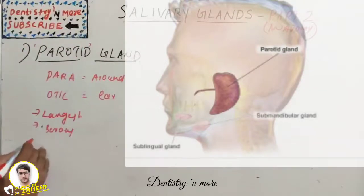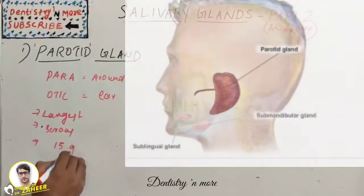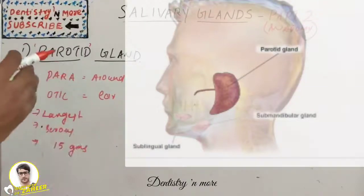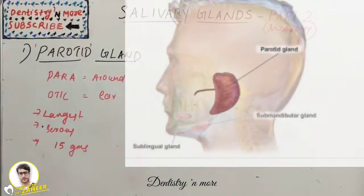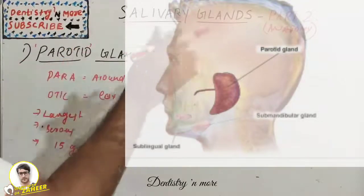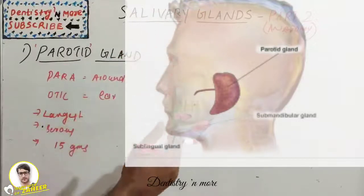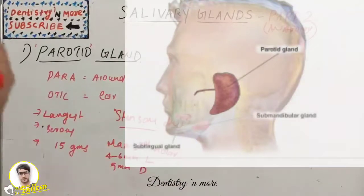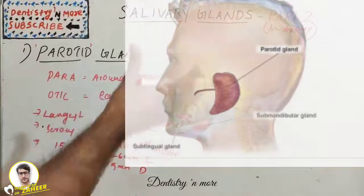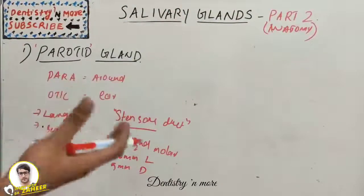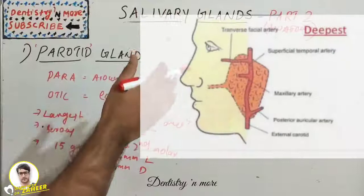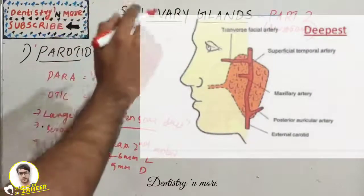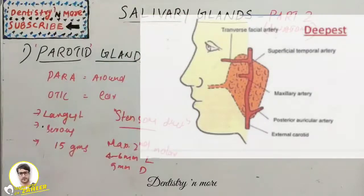The parotid gland weighs around 15 grams. Its superficial portion lies in front of the external ear, and its deeper part fills the retromandibular fossa. The arteries present in and around the parotid gland are the external carotid artery, maxillary artery, superficial temporal artery, and posterior auricular artery.